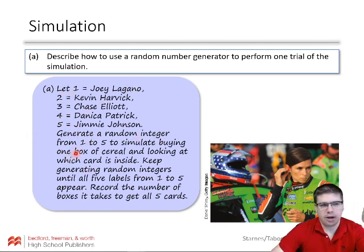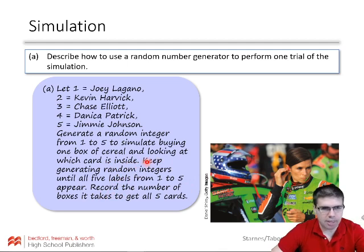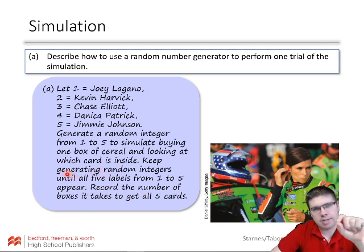And they're going to generate a random integer between one to five to simulate—you could do random in your calculator, one comma five—to simulate buying one box of cereal and looking at which card is inside. And then you repeat that process, keep generating random numbers until all five labels from one to five appear, and then record the number of boxes it takes to get all five cards. So that is one trial, actually, even though we had repetition of randomness in there, ultimately this was one trial and we recorded the number it took.